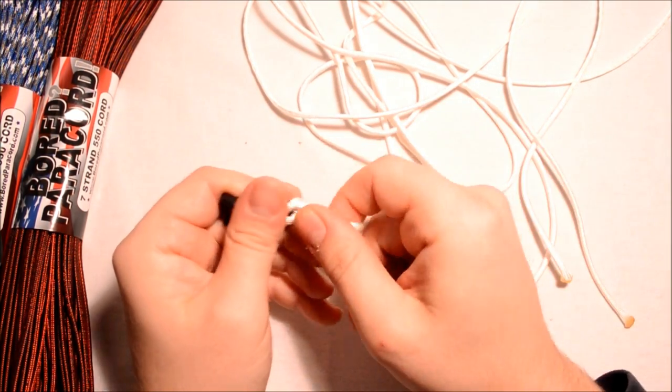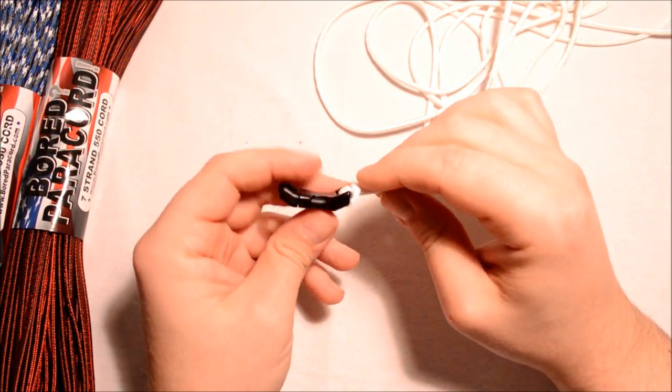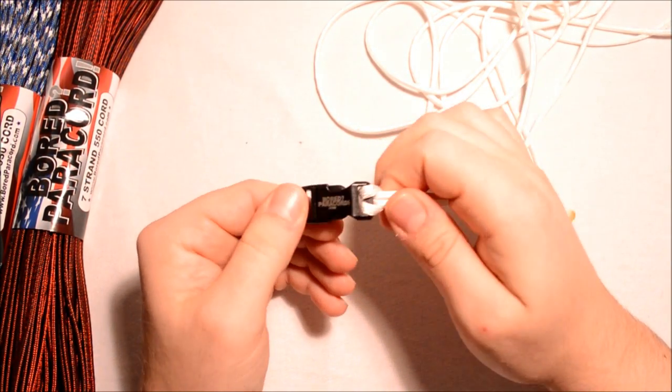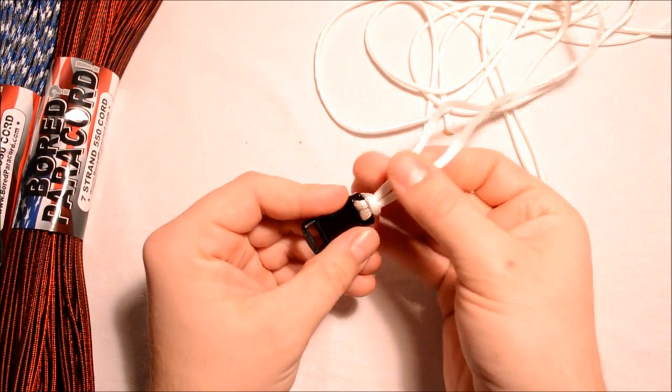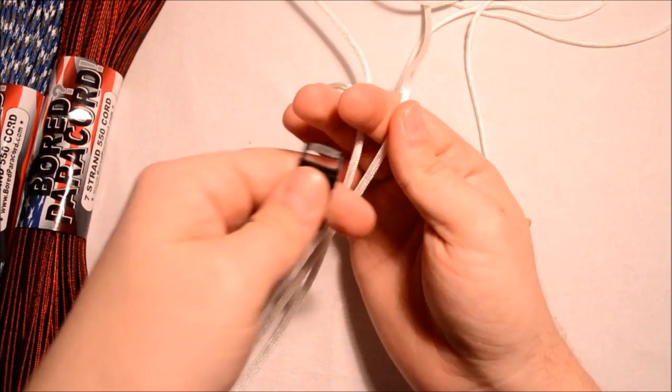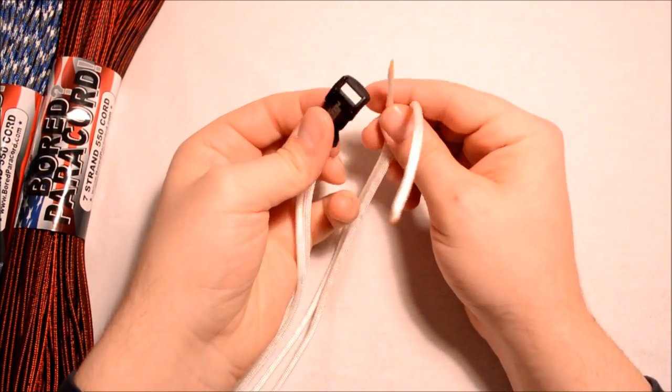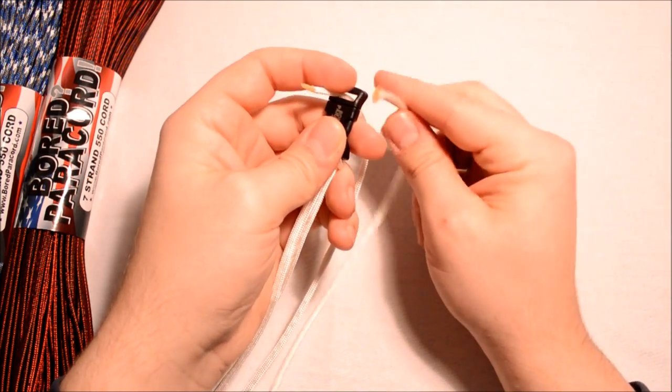I've already got my paracord here, I've got about 12 feet of white continuous, and I've already done the half hitch on one side. So we're just going to flip that over, pull the paracord through my fingers so that we get rid of all the twists, and then flip the buckle back over, and from the bottom we go up through.